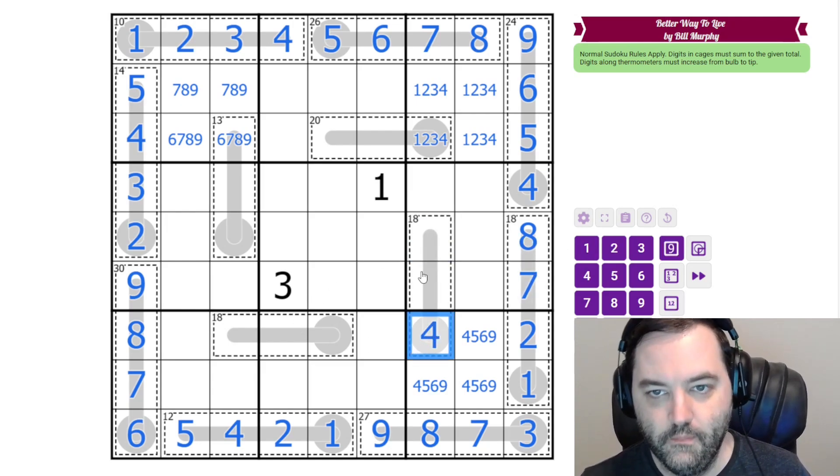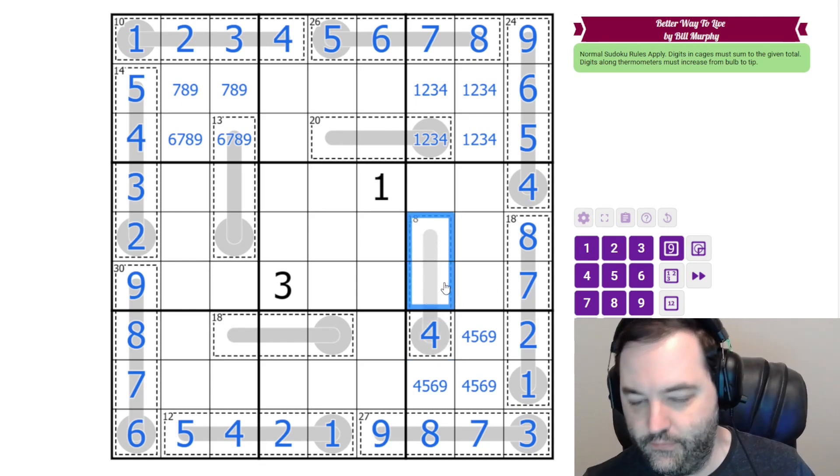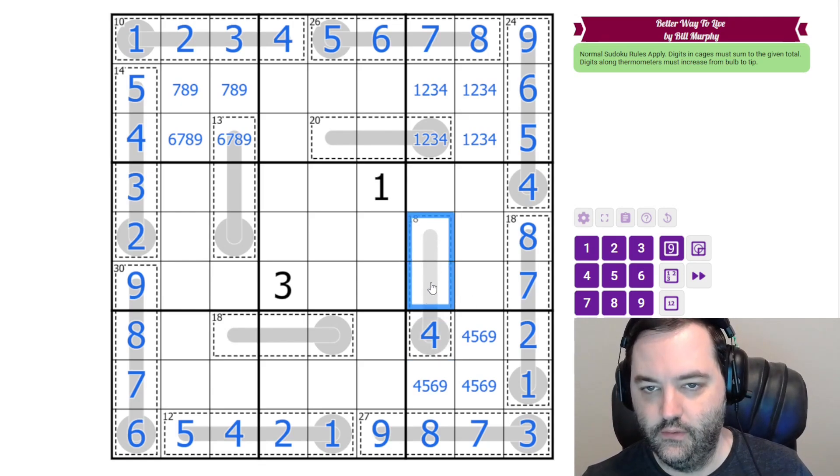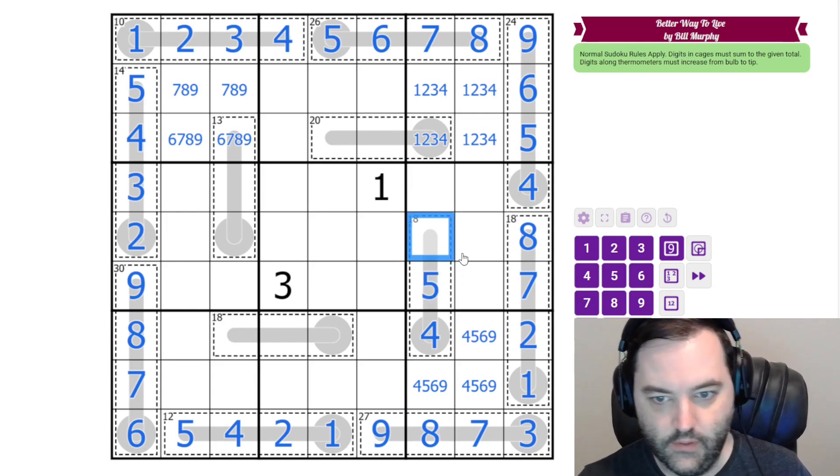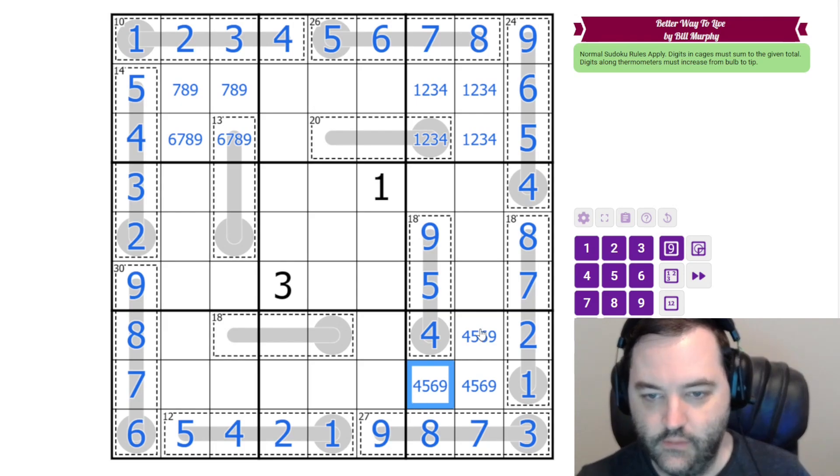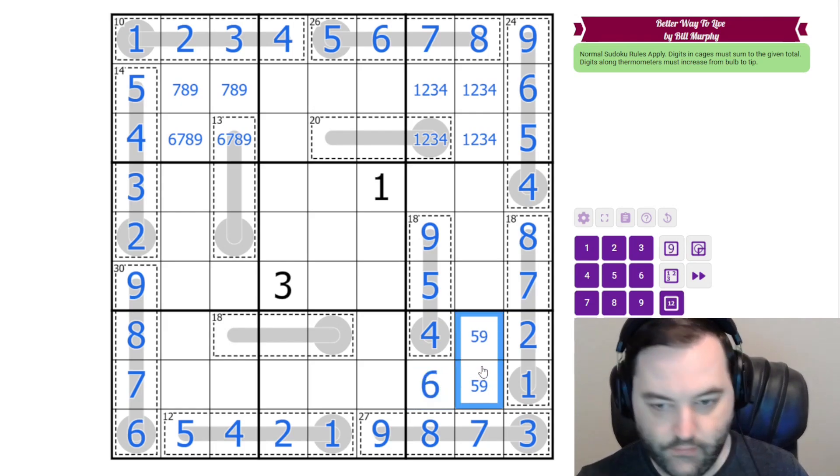And we need 14 in the remaining cells. There are two ways to do that. Six, eight is one of them. We've got eights there. The other way is five, nine. So that is what that has to be. This is a six now. These are not four and six.